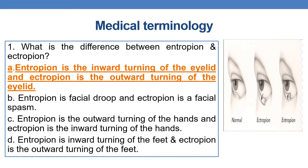Next, coming to questions from anatomy. What is the difference between entropion and ectropion? EN means inwards and EC means outwards. Entropion is the inward turning of the eyelid, and ectropion is the outward turning of the eyelid. Here you can see the diagrammatic representation — this is ectropion, the outward turning; entropion is the inward turning. This is the normal eye, this is ectropion, and this is entropion.